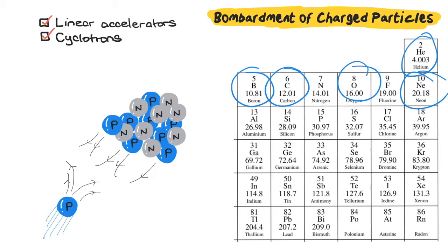There's cyclotrons, which take up less space because the charged particles are accelerated in a spiral path, and so uses this for the production of radioisotopes for medical use.